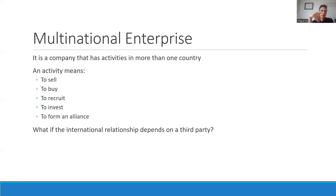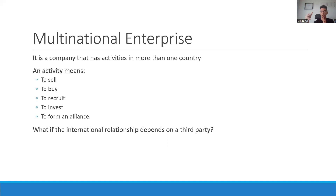Here's another interesting question: what if the international relationship depends on someone in between? For example, you buy an ingredient from Peru, but there is a middleman like Walmart — Walmart imports the good, and then you buy it locally at your Walmart. You think you're buying locally, but the product comes from abroad. According to our broad definition, this still makes the company multinational, because the ingredient is from Peru, even though you bought it at your local Walmart.